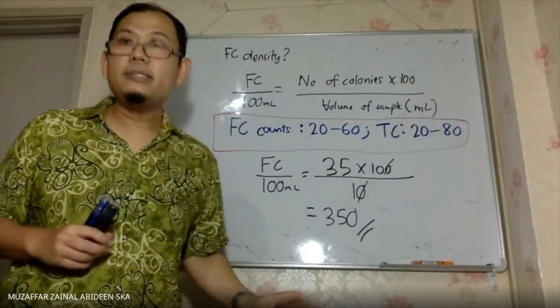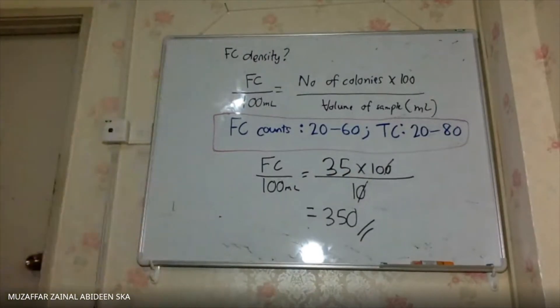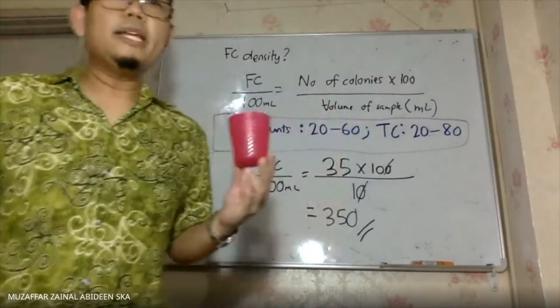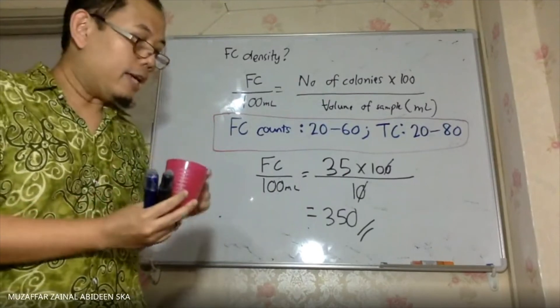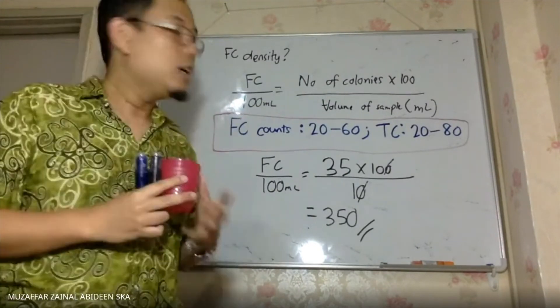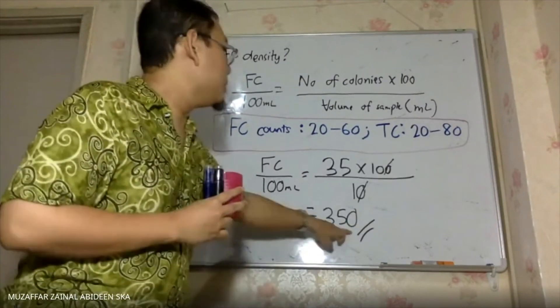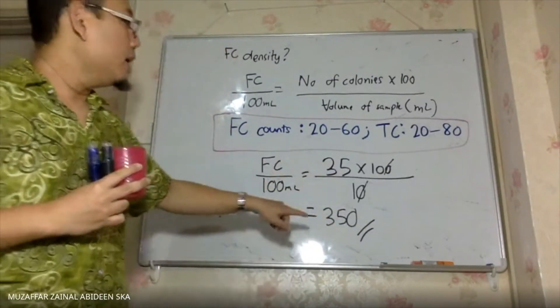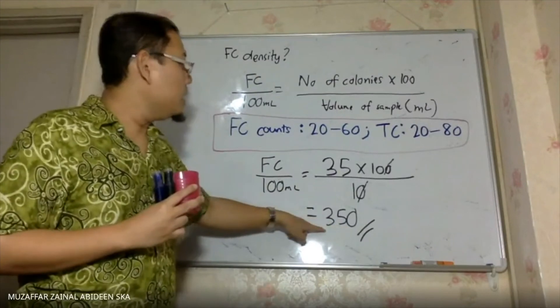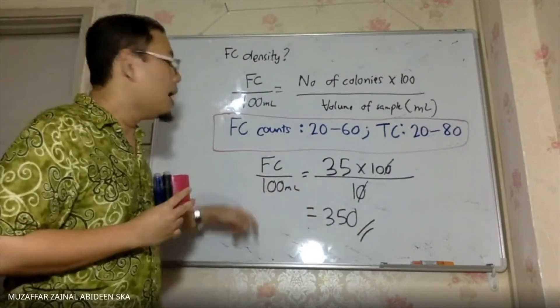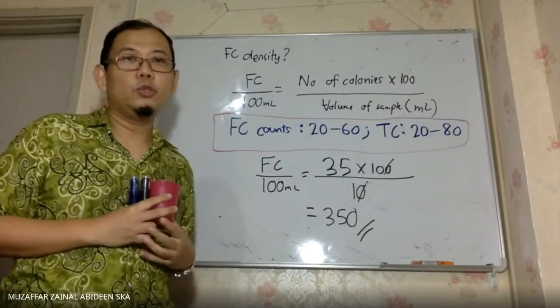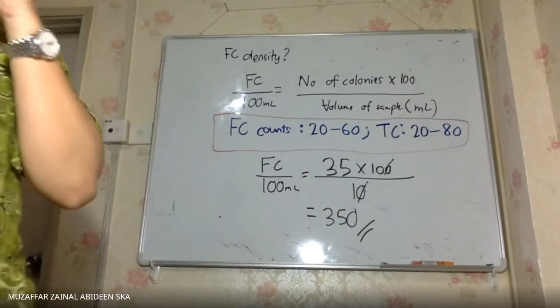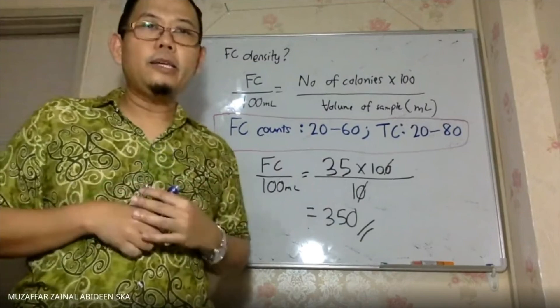What it means, assuming that this is 100 ml water, it has 350 colonies inside it. So you need to write down your answer as it is. It contains 350 fecal coliform in 100 ml. So that's how you write down your answer. Is that clear? Is there any question to ask?